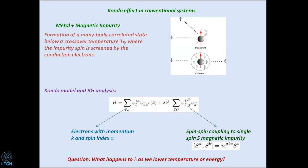Let me begin with what is the Kondo effect. The Kondo effect is an effect that emerges out of interaction of a metallic substrate with a magnetic impurity. If you have a metal with a conduction band and you put in a magnetic impurity — an atom with a different spin — that spin interacts with the spin of the conduction electrons through an S·S interaction.